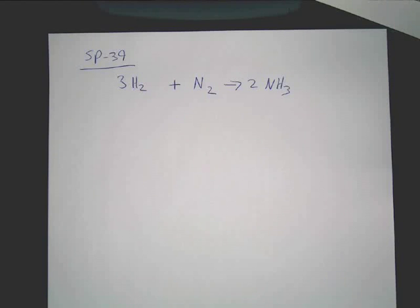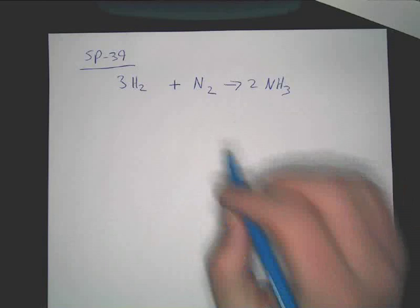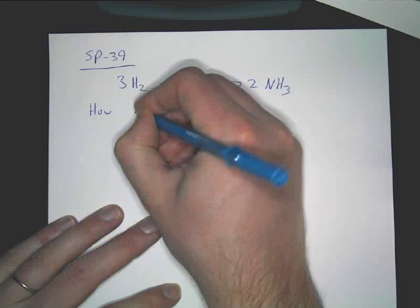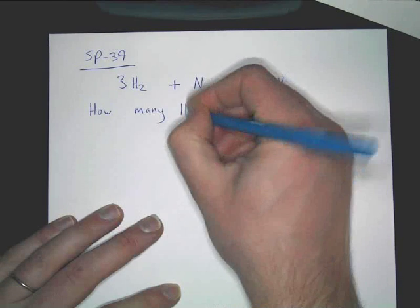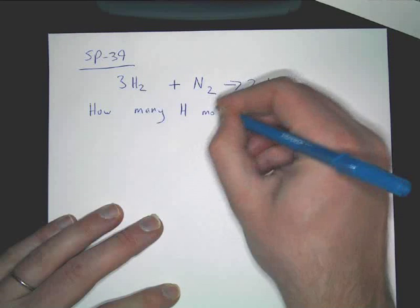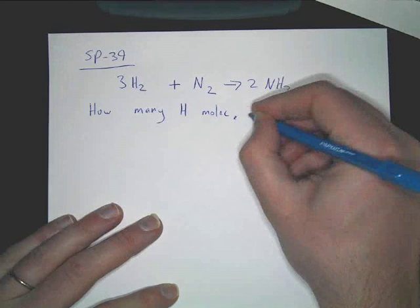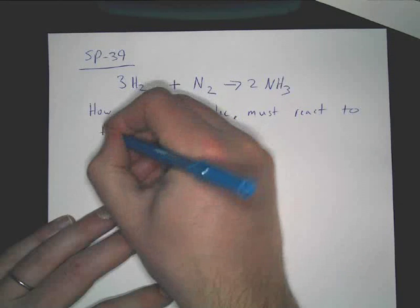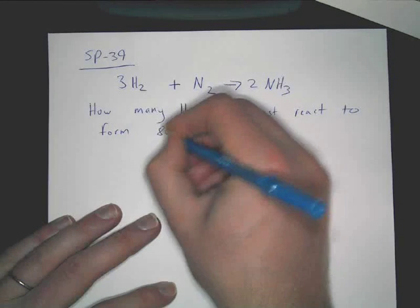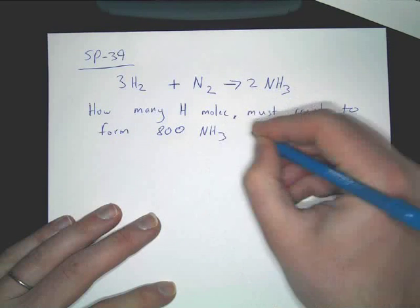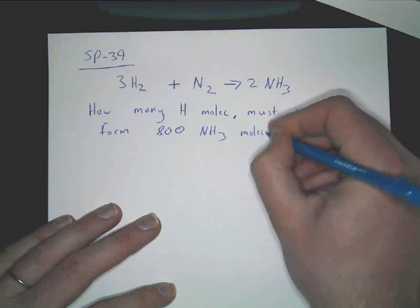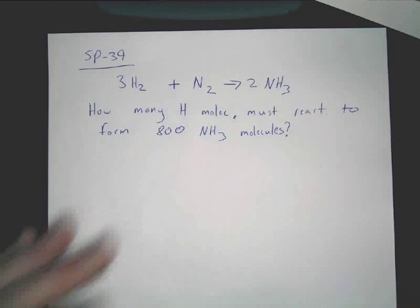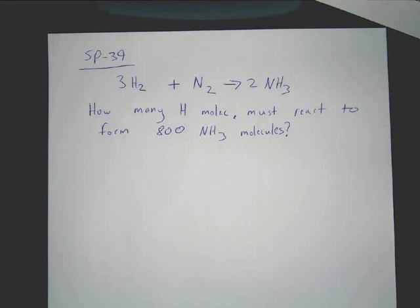First thing though, what we're going to do, let me just show you an example of a problem. So we'll just write, how many hydrogen molecules must react to form 800 ammonia molecules? So this is the type of problem you're going to be seeing.